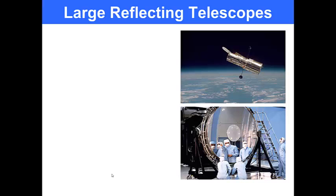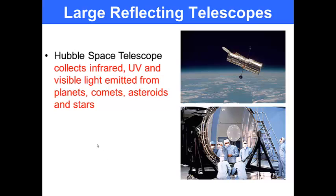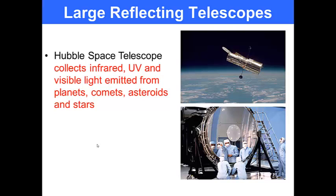The Hubble space telescope collects ultraviolet, infrared, and visible light emitted from planets, comets, and stars. It is another reflecting telescope. Here is a picture of its mirror. The telescope was launched high into the sky so that Earth's atmosphere does not absorb any of the electromagnetic radiation that the telescope is trying to collect.